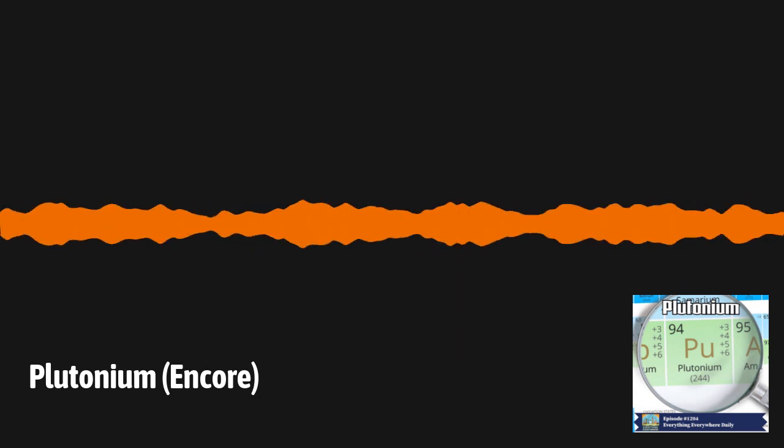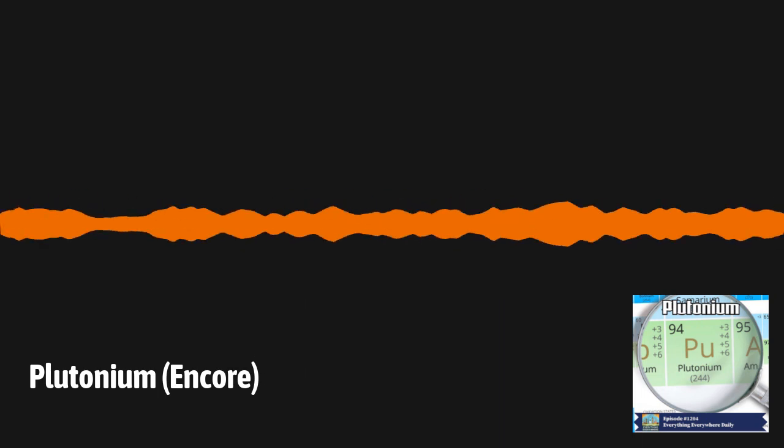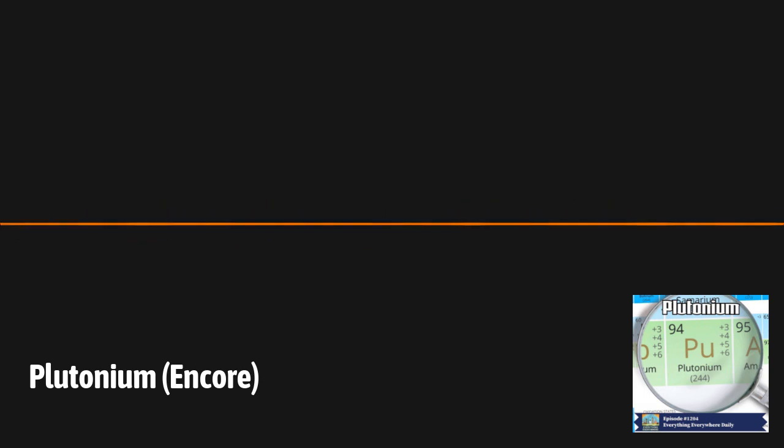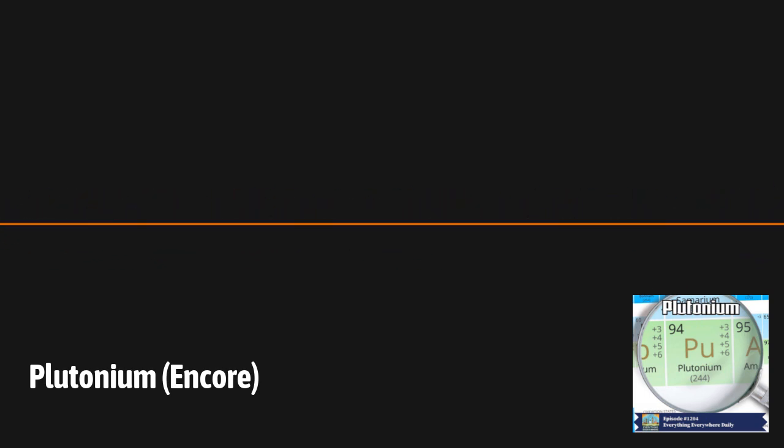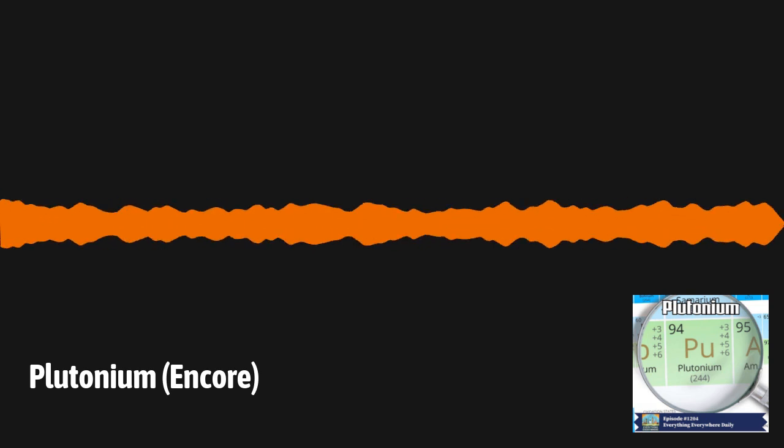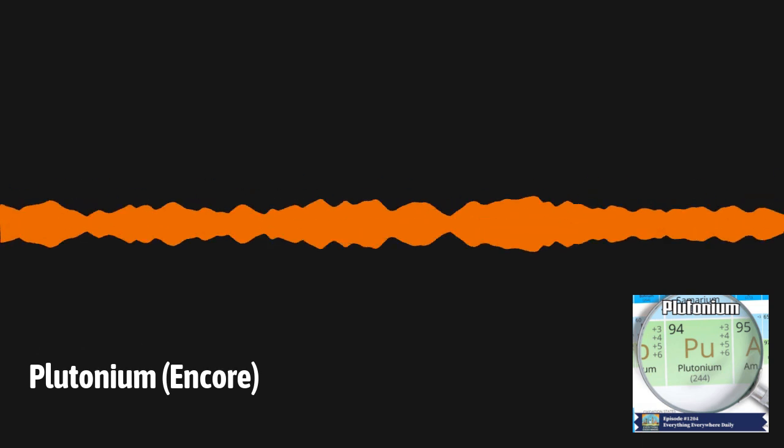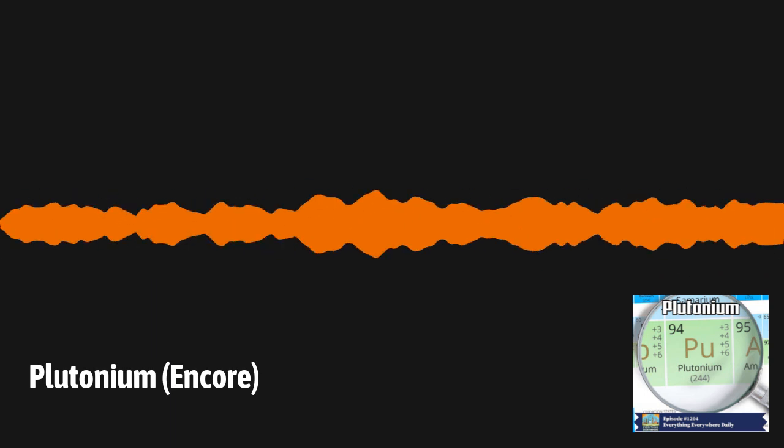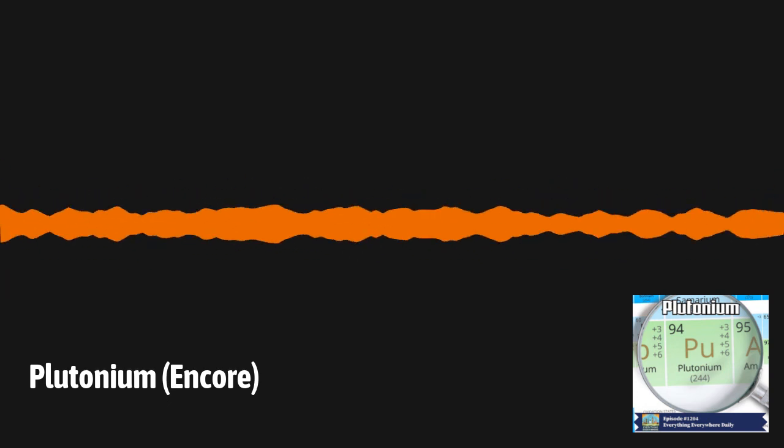Just months before the discovery of plutonium in 1940, element 93 was discovered by bombarding uranium with a cyclotron, and it was called Neptunium, the next planet after Uranus. Then, later that year, Seaborg and his group at the University of California, Berkeley, bombarded uranium with deuterium, a hydrogen isotope, which created element 94. And it was named after the planet after Neptune, or at least it was at that time, Pluto. Seaborg thought it would be funny to call it PU, and the abbreviation stuck.